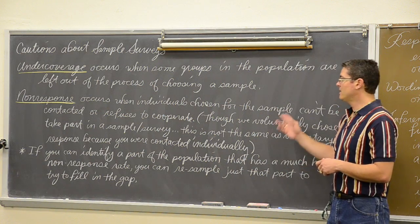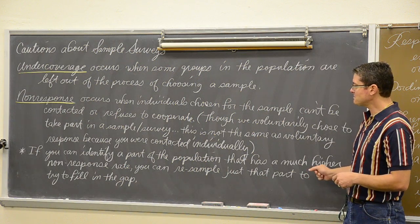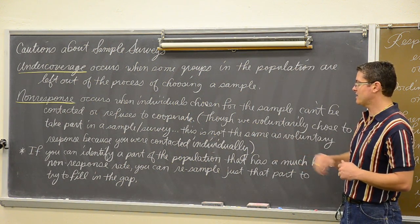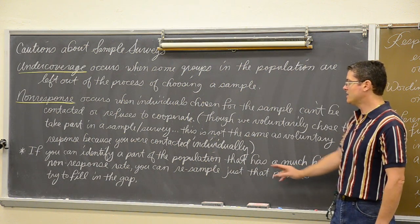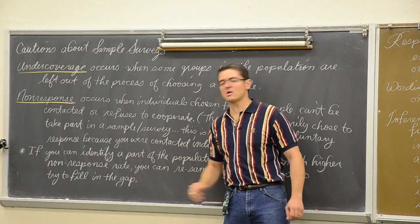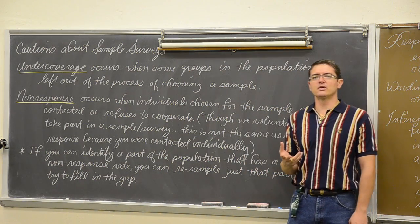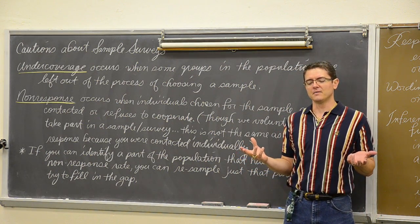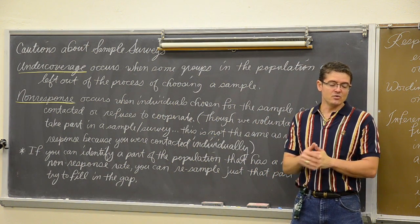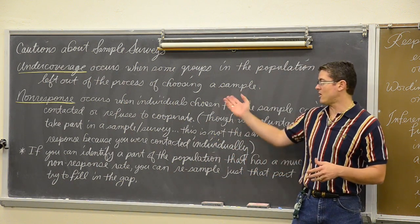Non-response is you get contacted individually and for some reason you refuse. If you can identify a part of the population, you as a statistician, if you can identify a part of the population that has a much higher non-response rate, you can re-sample just that part of the population to try and fill in the gap. If you are doing a sample survey and you notice that large businesses tend to return your request or answer your questions less often than small business, then you can do a small SRS of just large businesses to try and fill in that gap in your data from all the non-response.